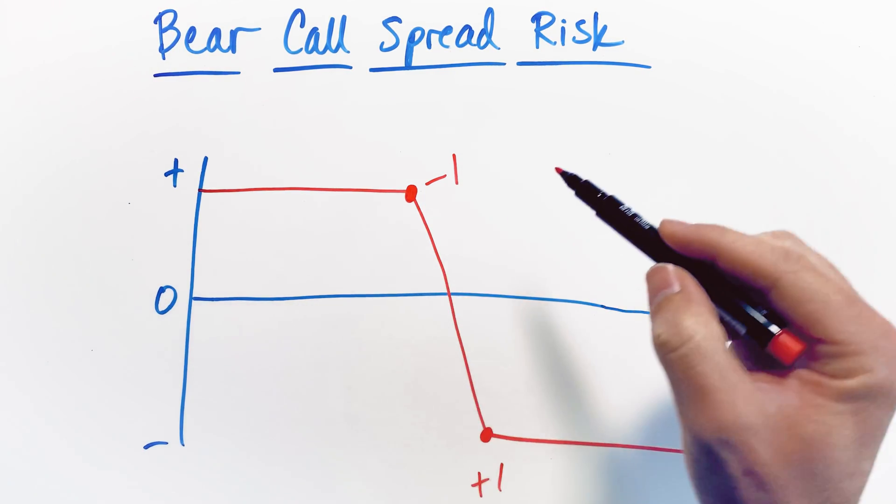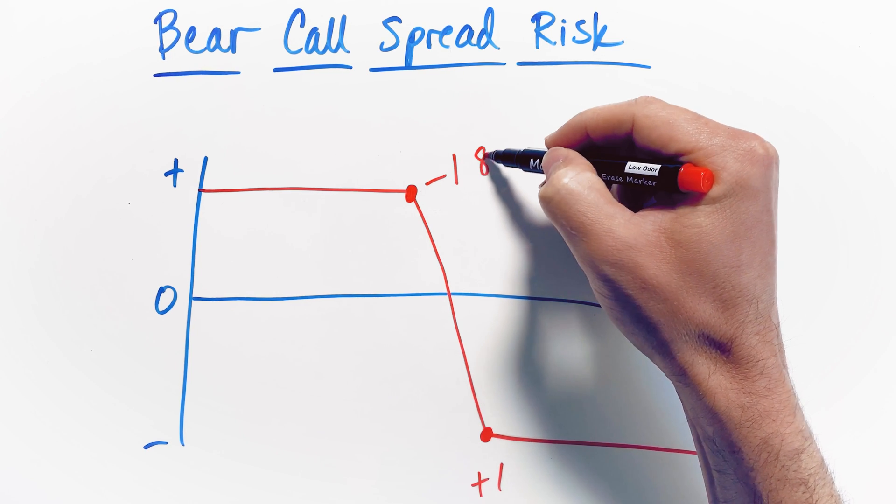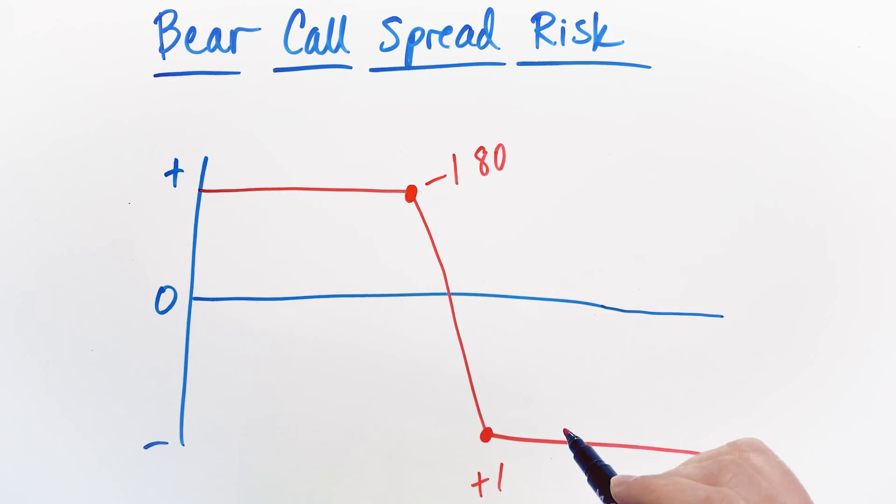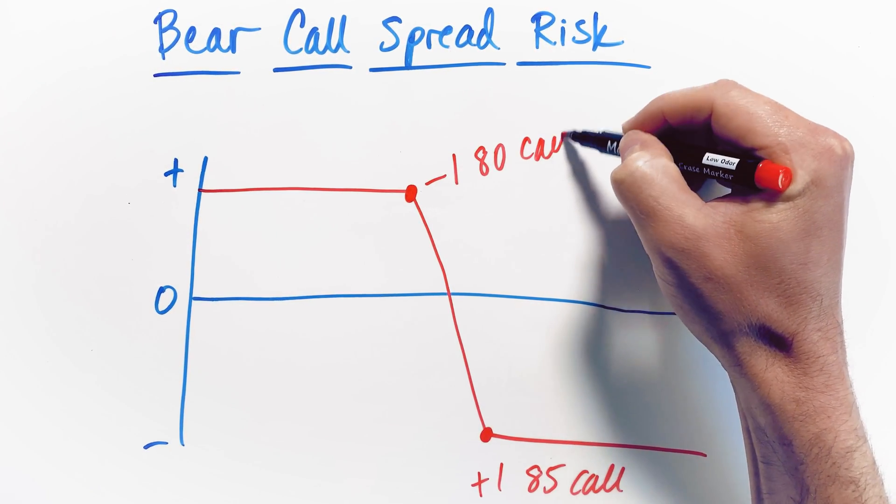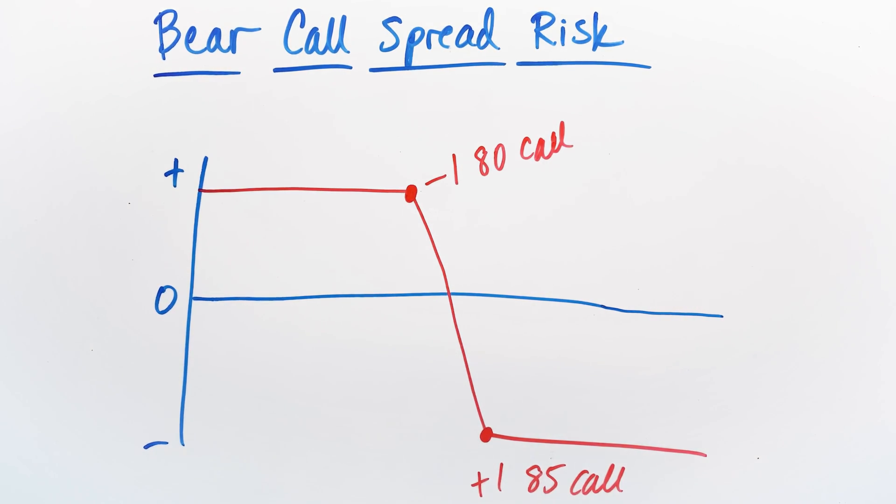So in this case, let's say you sell just one contract at an 80 strike, and this is a call option that you sold at 80. And then you bought another call option at an 85 strike. So you sold the 80 strike call and then you bought the 85 strike call.